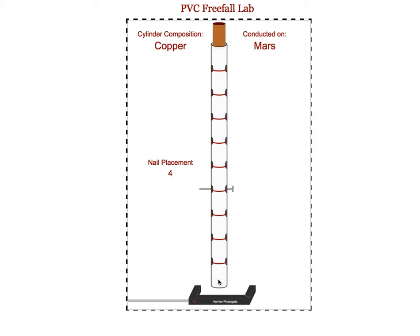The cylinder is going to be moving so quickly through the photo gate that there's not going to be that much difference between the speeds at the beginning, the middle, and the end. You can get really good results, assuming that you're finding the speed as the center of the cylinder passes through the photo gate.